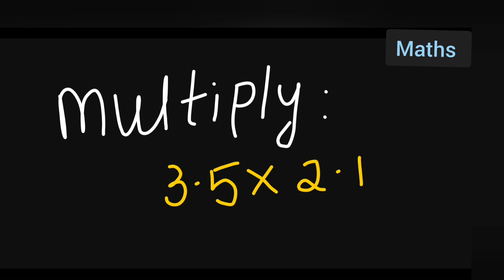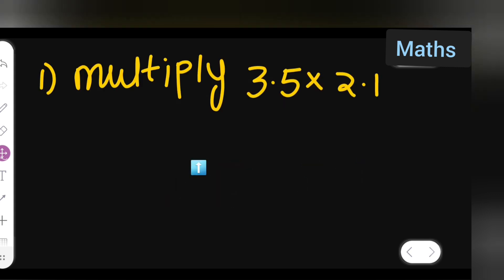Welcome to today's class of mathematics. Let us see today's question: multiply 3.5 multiplied by 2.1. Let us multiply this. First, take down the question: multiply 3.5 multiplied by 2.1. So first you can write down 3.5, we are multiplying it with 2.1.